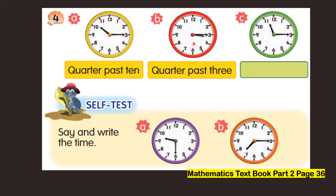The hour hand points to three and the minute hand points to three, so this is quarter past three. And if the minute hand moves from twelve to three, that is a quarter of an hour, so the time is quarter past eleven.